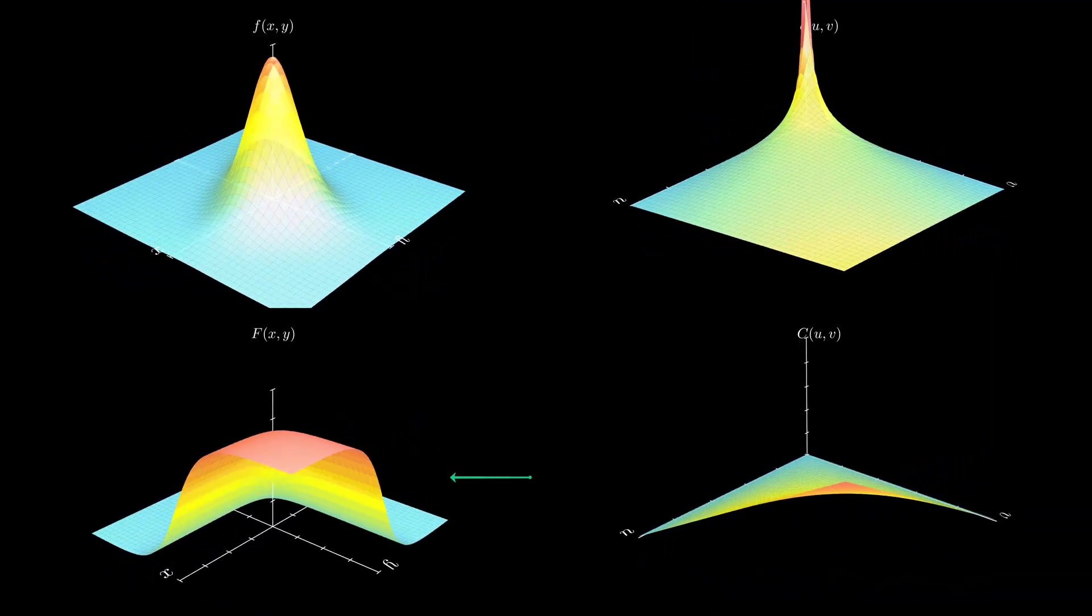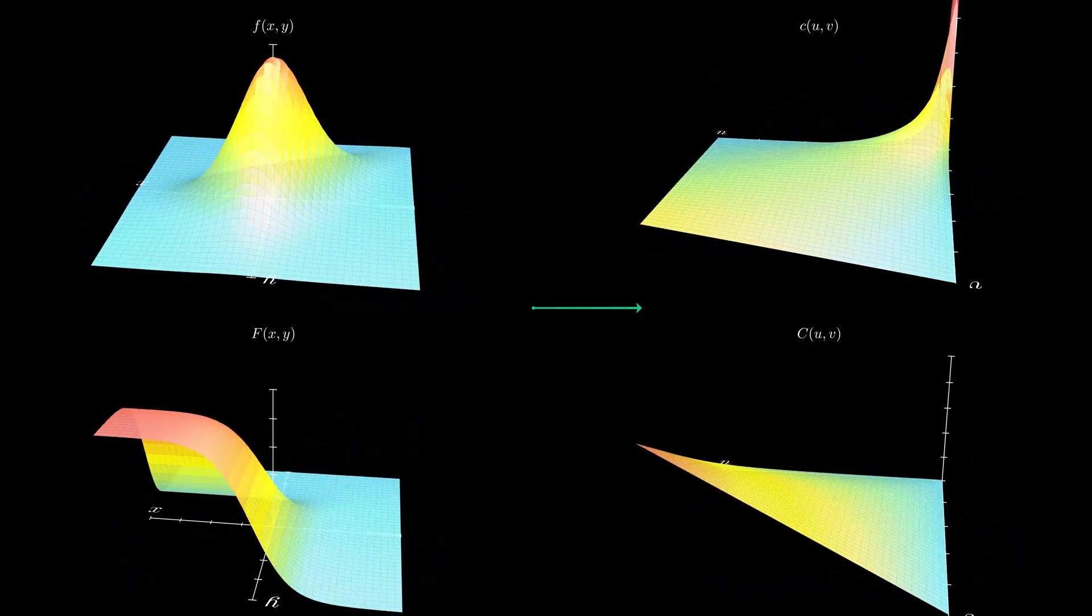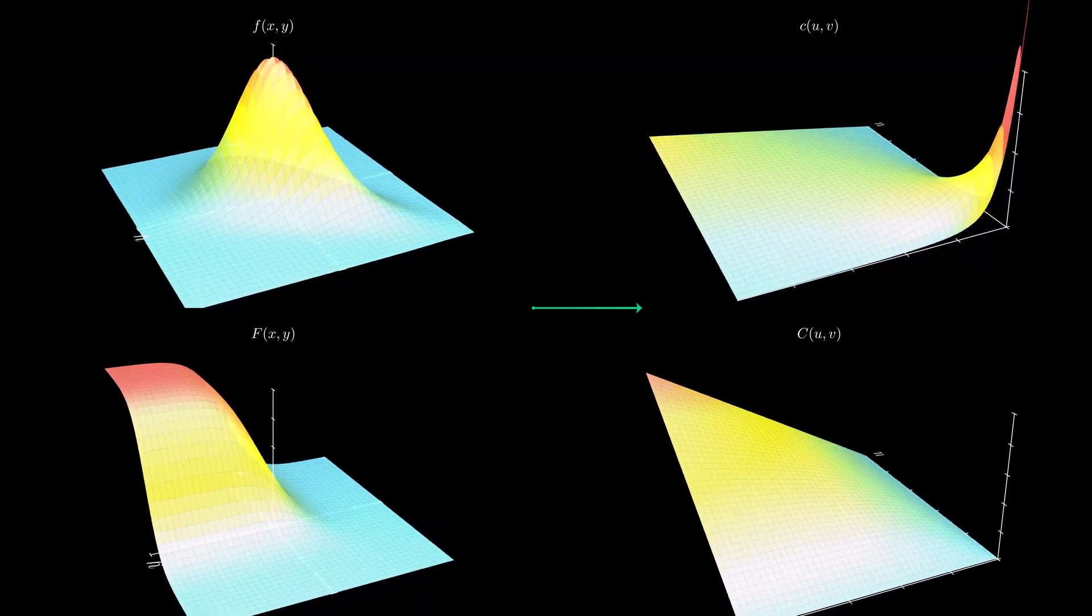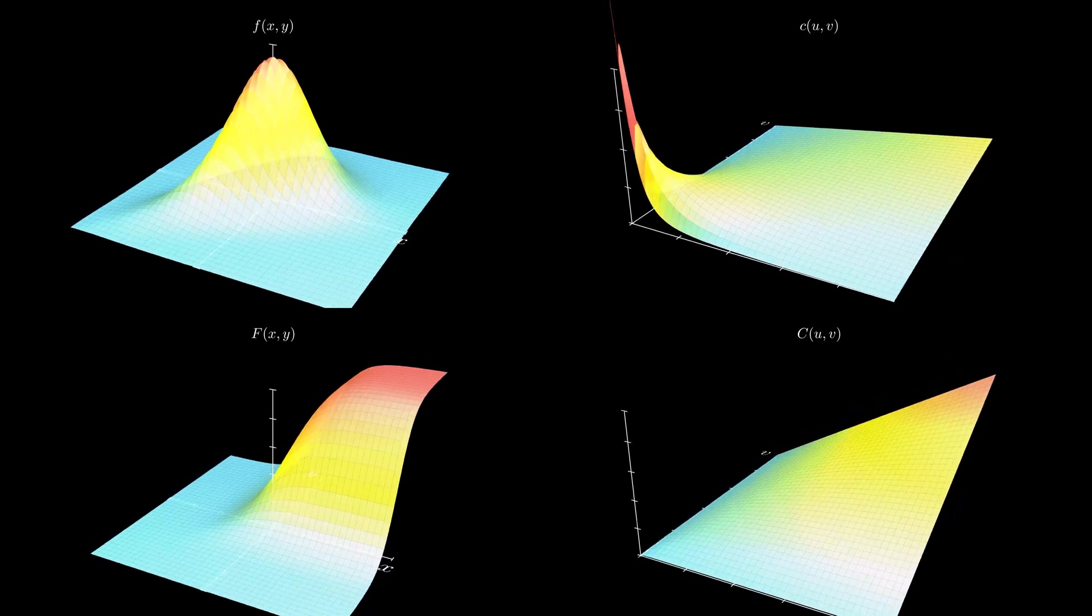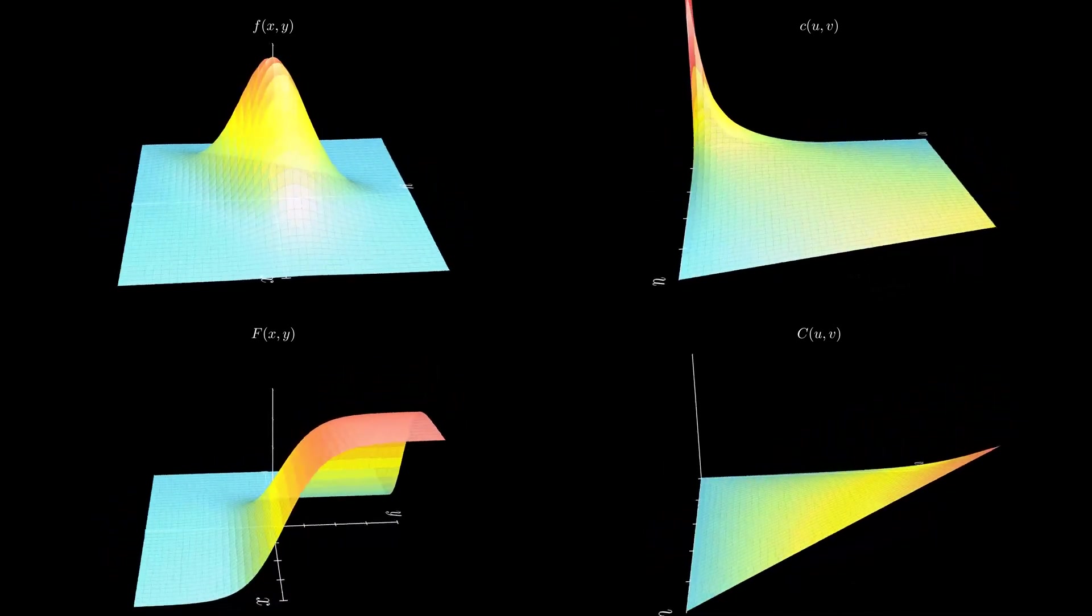And the CDF looks like this. But when we move into copula space, we transform each variable using its own CDF. So now we are working with u1 and u2, both confined to the 0-1 range.